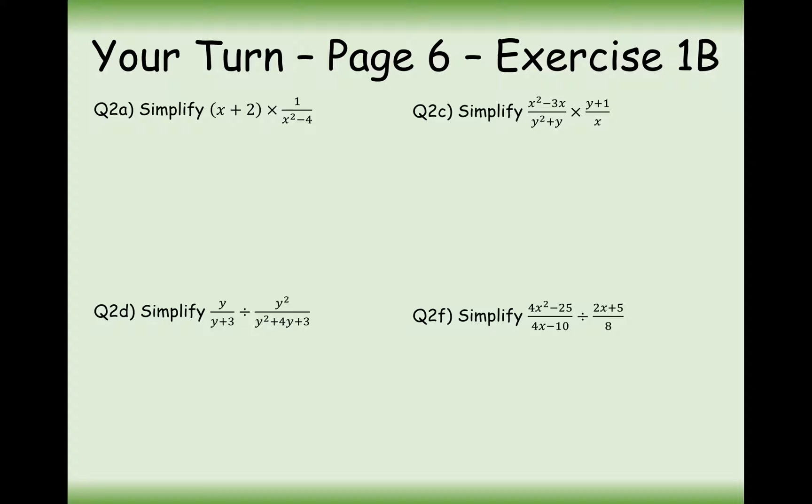Alright then, let's go through question 2a. Now, we've got here x plus 2, and it's not a fraction. Now, what we can always do is, if we've got an expression that's not a fraction, we can always write it as a fraction over 1. So effectively think of this as over 1. And on the right-hand side, we can factorise the quadratic on the bottom to x plus 2, x minus 2. Cancel out the x's here and here, and all you're left with is your final answer, which is 1 over x minus 2. 1 times x minus 2 is just x minus 2.